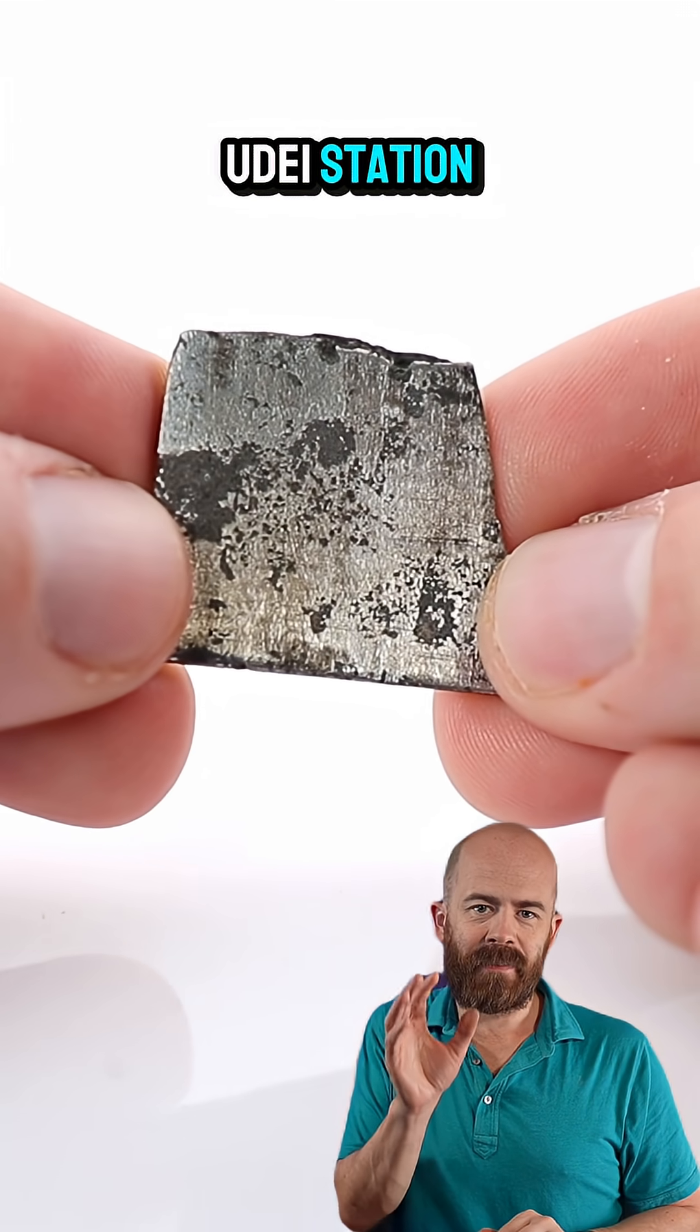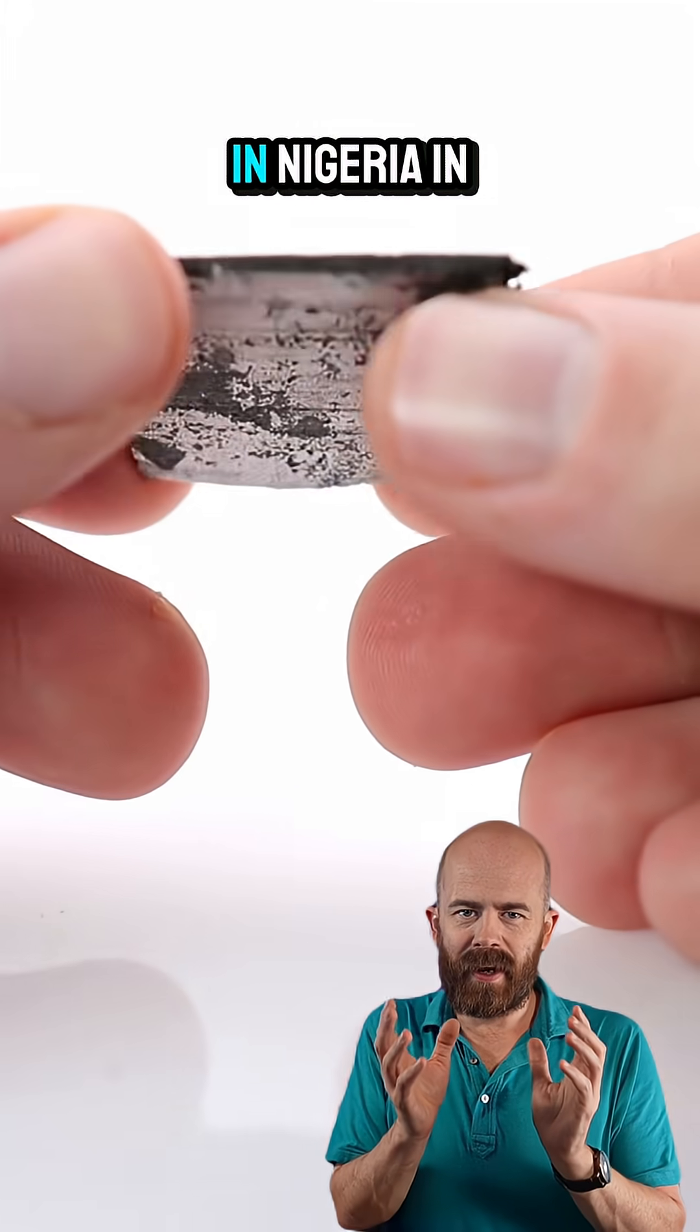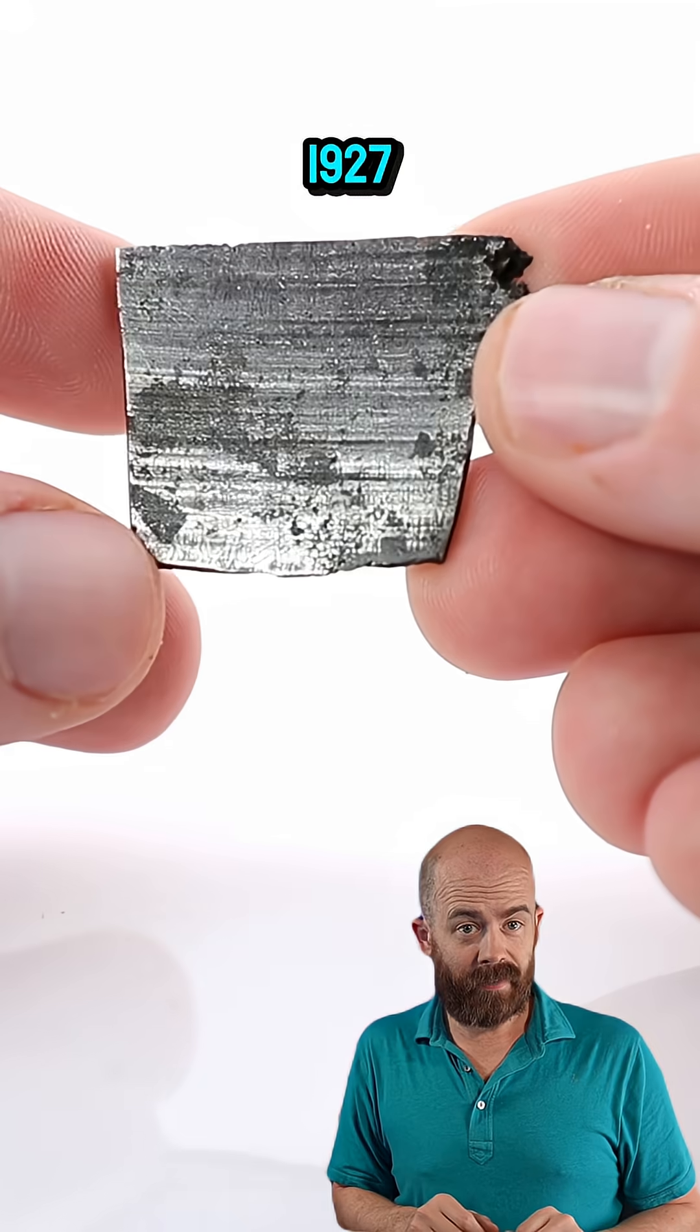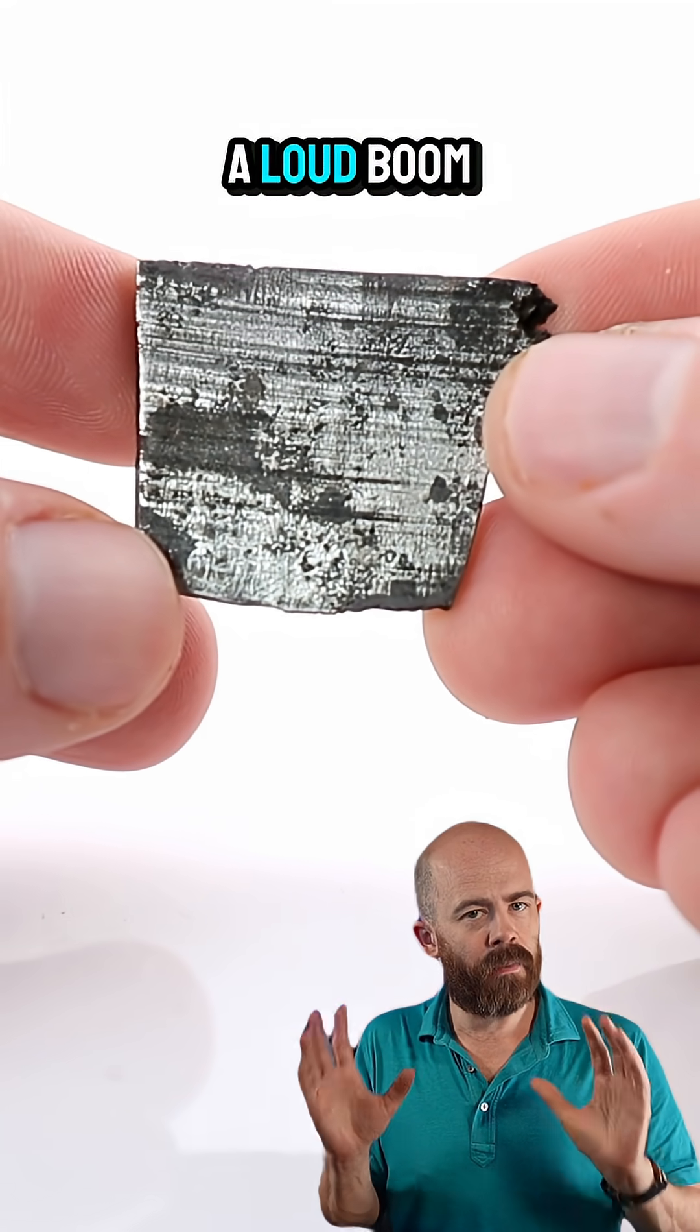Let's talk about what makes the Uday Station meteorite so unique. I want you to put yourself near the banks of the Benu River in Nigeria in the spring of 1927. You hear a roar, the ground shakes, there's a brilliant light in the sky, and then there's a loud boom.